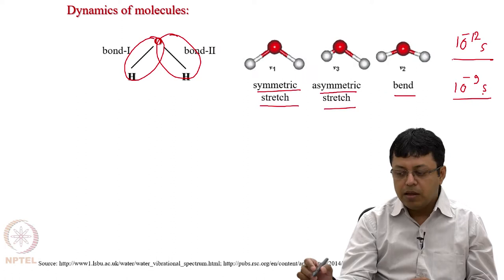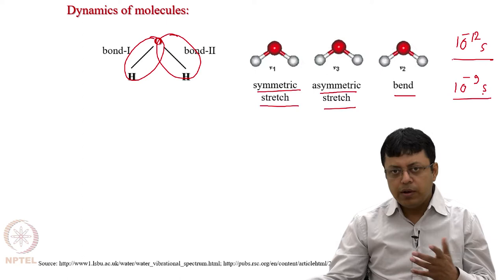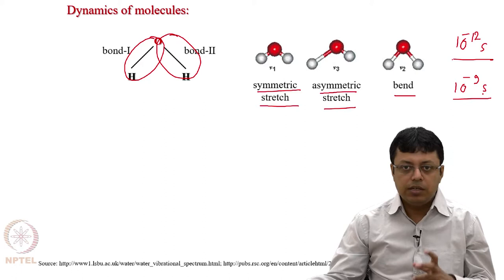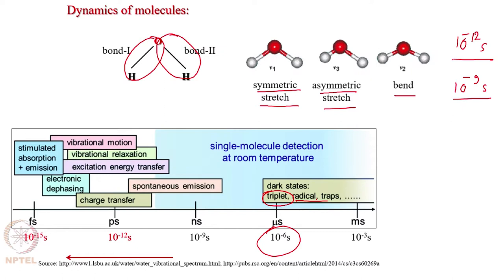Earlier, flash photolysis time scales were limited by electronics to about 10 to the power minus 9 seconds - one nanosecond - so there is a 3 order of magnitude improvement needed. Before discussing how to tackle this problem, let us look at the wide range of chemical and biological processes and what time scales are associated with them. With microsecond flash photolysis, you can study long-lived triplet states, radical species, or species stabilized in ion traps or matrix traps.